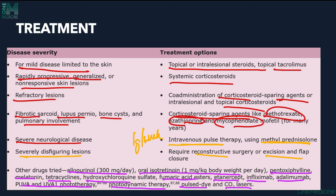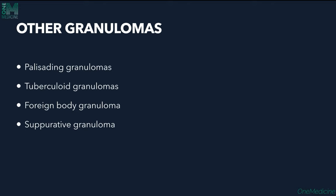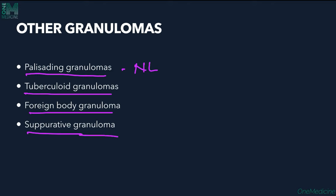This concludes the topic of sarcoidosis. Other granulomas besides sarcoidal granulomas include palisading granulomas as seen in necrobiosis lipoidica, tuberculoid granulomas with caseation necrosis, foreign body granulomas caused by foreign body triggers, and suppurative granulomas seen in certain infections.